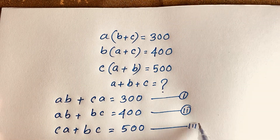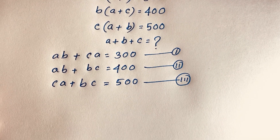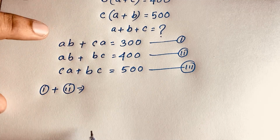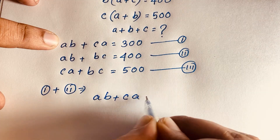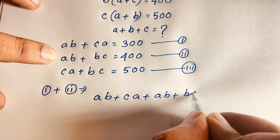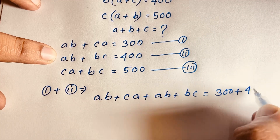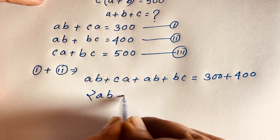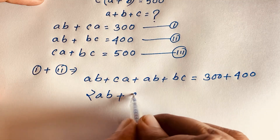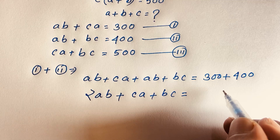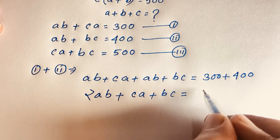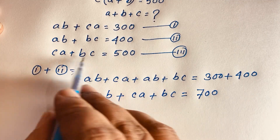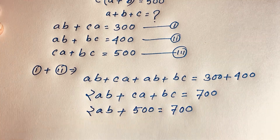Now I add equation 1 and equation 2. Equation 1 plus equation 2 gives ab + ca plus ab + bc equals 300 plus 400. That simplifies to 2ab plus ca plus bc equals 700. Notice that ca plus bc is exactly equation 3, which equals 500. So 2ab plus 500 equals 700.